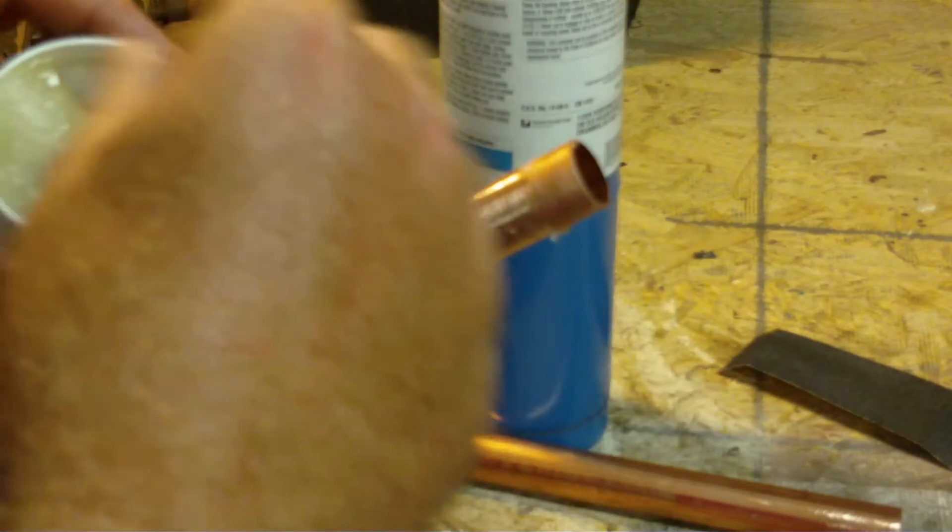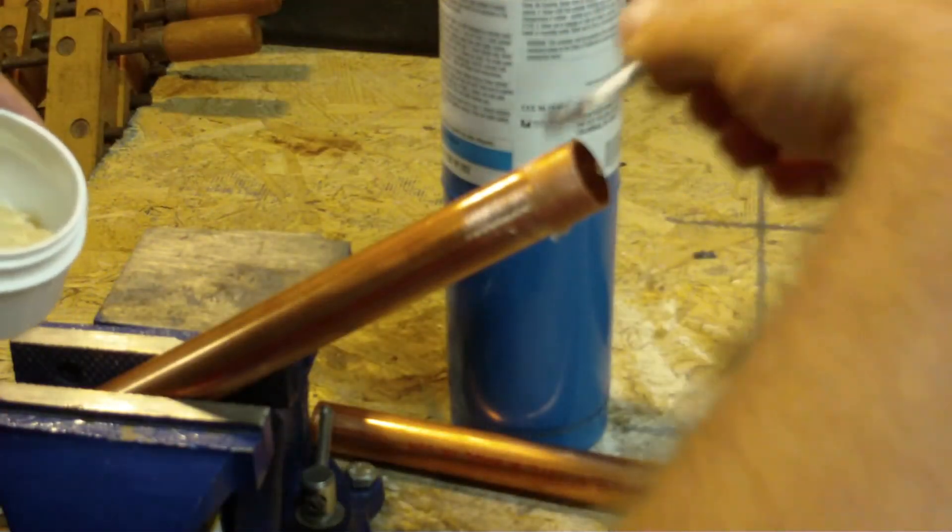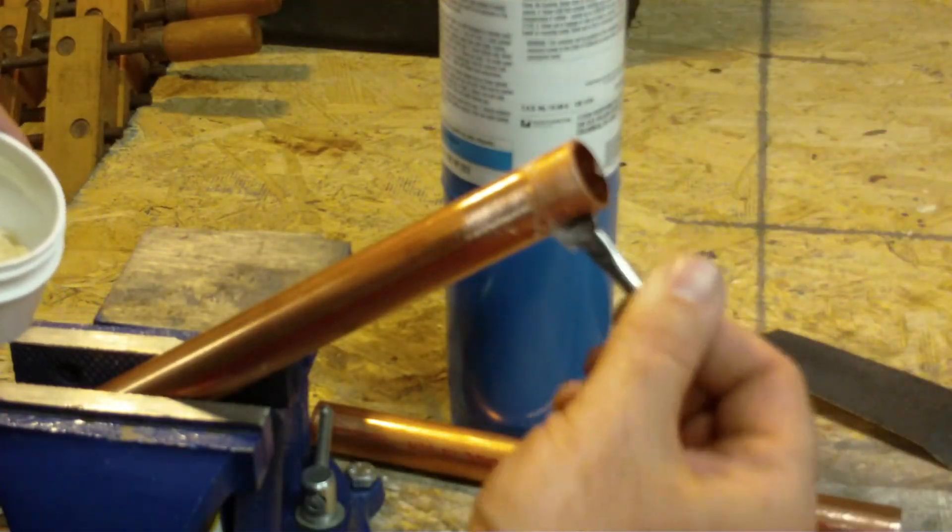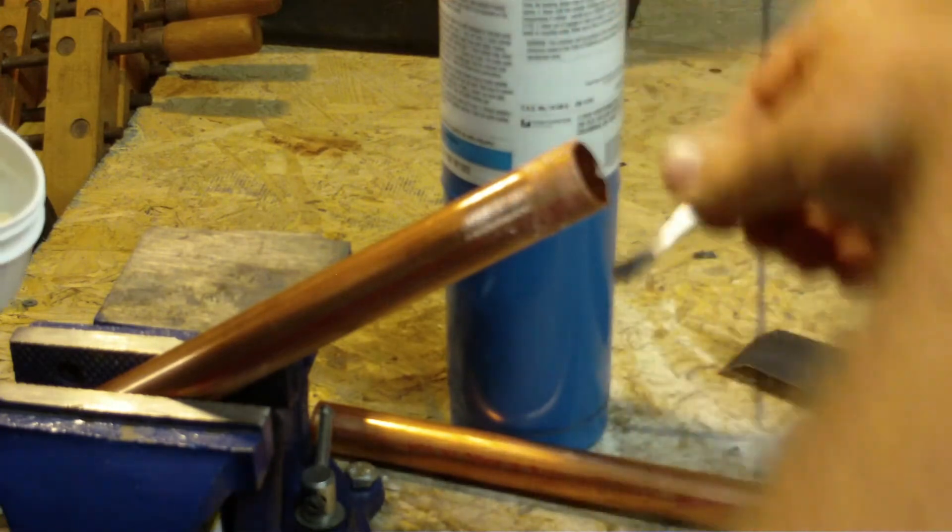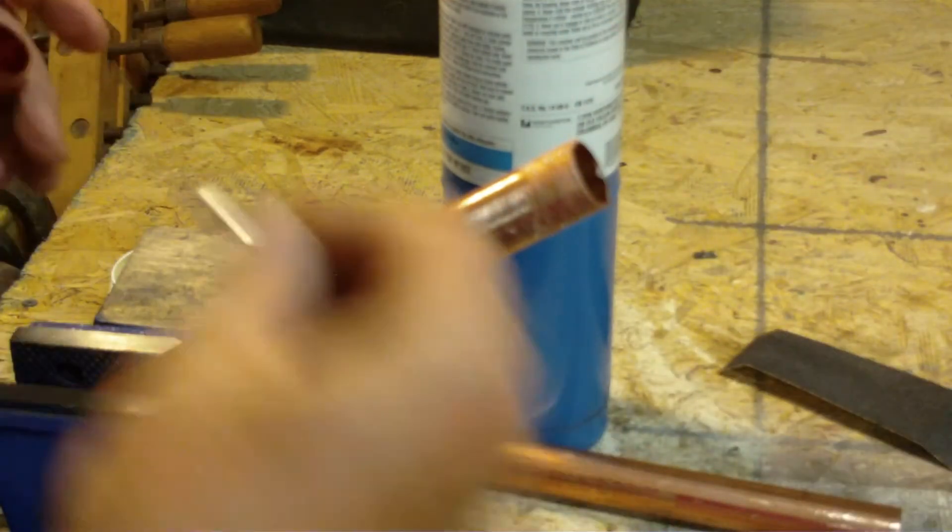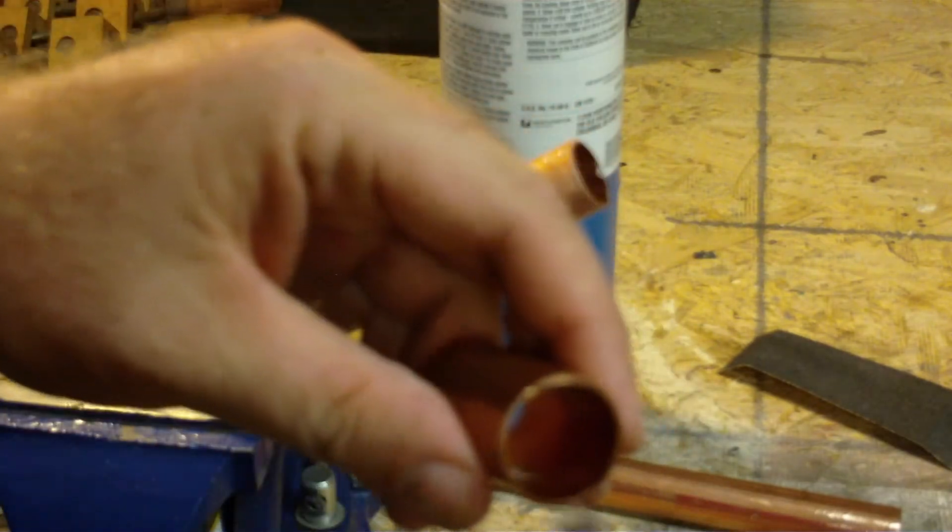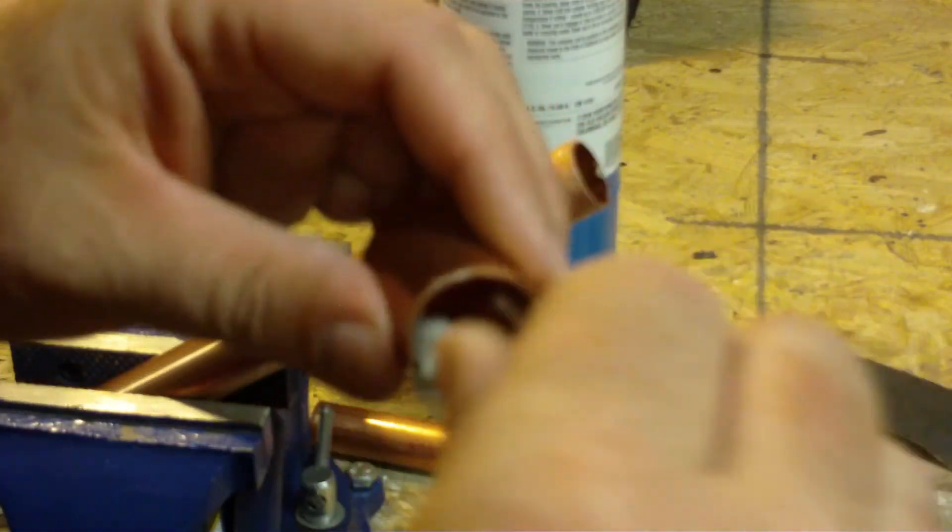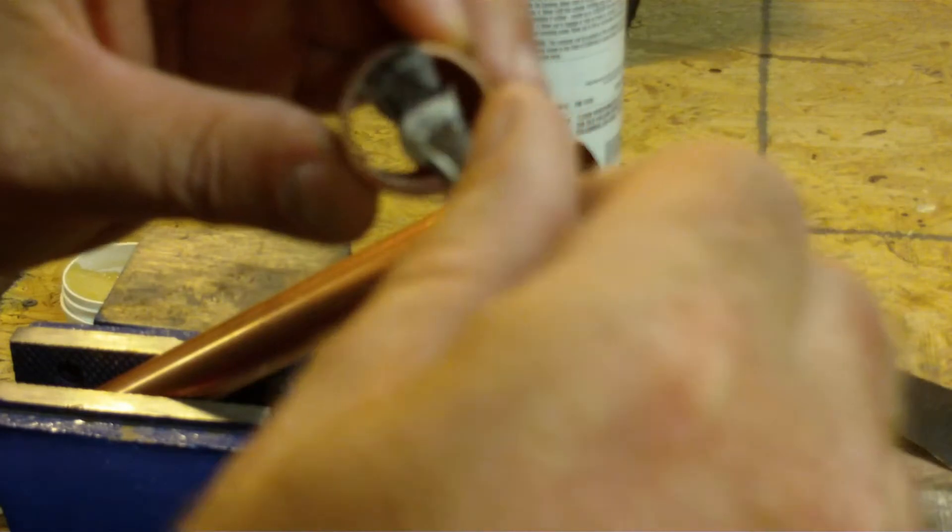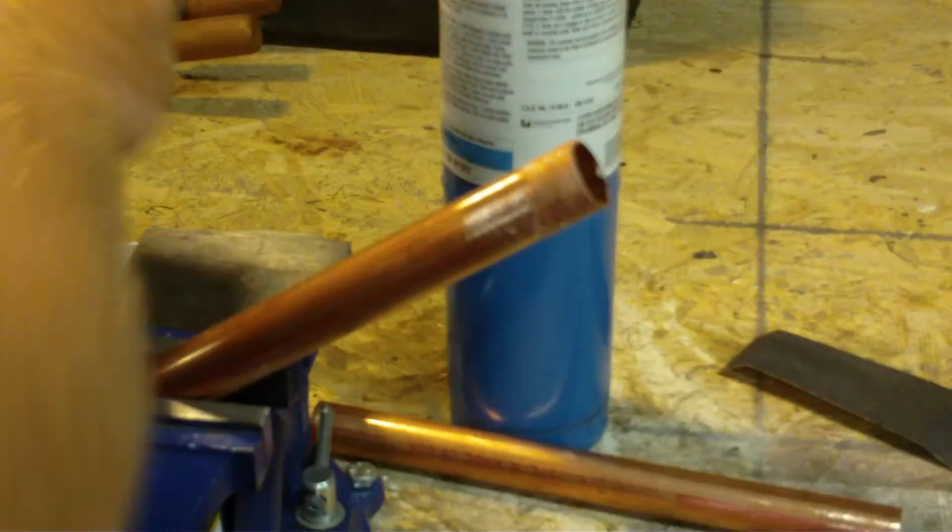Apply a decent amount to the surface you want to solder together. Be pretty liberal with it. You also want to apply it inside your coupling. You can get the couplings with the stop or without the stop. Usually just want to get the ones with the stop if you're just putting a coupling joint in.